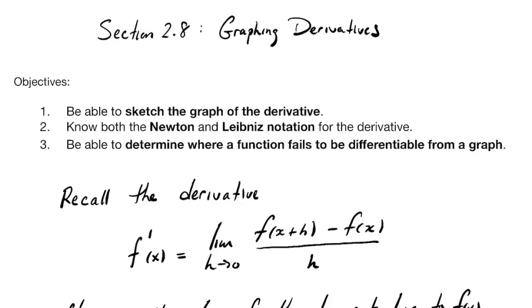Hey, welcome back to Calculus. We're continuing our work in section 2.8 with this second video — there's going to be three of them total. In this second video we're going to be talking about the derivative as a function, focusing on elements of its graph. I've cut out some of the objectives from the Canvas page: sketching the graph of a derivative, looking at graphs and derivatives side by side, sketching one from the other. I'm also going to talk about Newton versus Leibniz notation for the derivative — that'll be at the end.